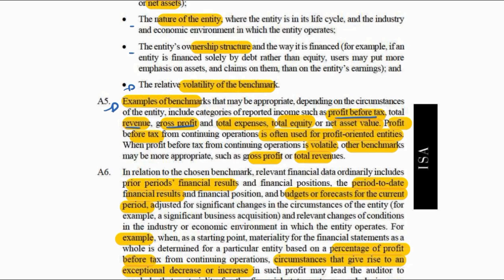A5 explains examples of benchmarks: profit before tax, revenue, gross profits, total expenses, equity, or assets. You would use profits if it is a profit-orientated entity, but if profits are volatile, then gross profit or revenue would be acceptable — because they all affect profits, whether it's income-generating revenue, gross profits, or net profits.